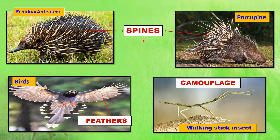The next adaptation is spines. The bodies of porcupines and echidnas are covered with sharp spines that help protect them from their enemies. Next is feathers. The bodies of birds are covered with feathers that help them to fly and also to keep them warm. The body coverings of some animals match with their surroundings, making the animal hard to spot and helping it protect itself from enemies. This ability is called camouflage.